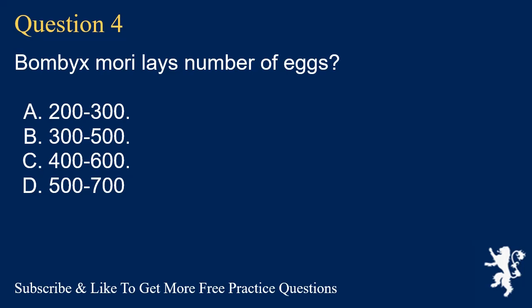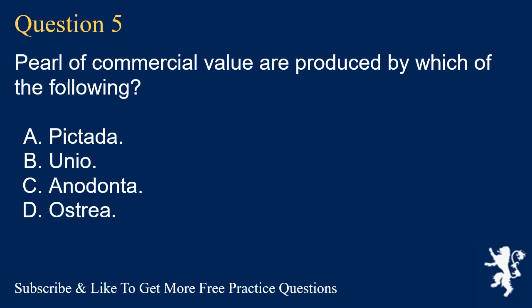Question 4. Bombyx mori lays how many eggs? A. 200-300. B. 300-500. C. 400-600. D. 500-700. Answer: B. 300-500.